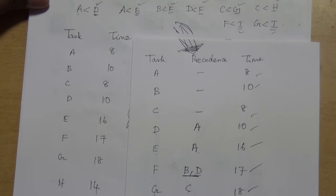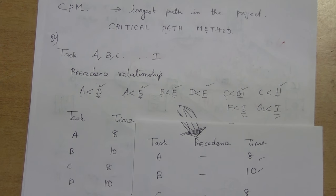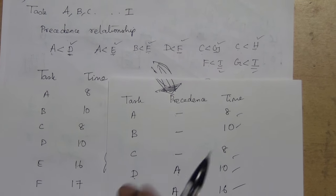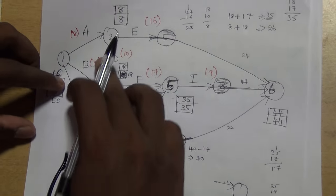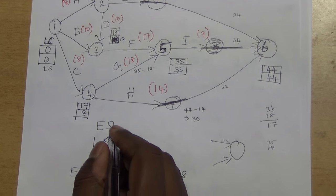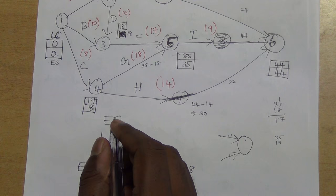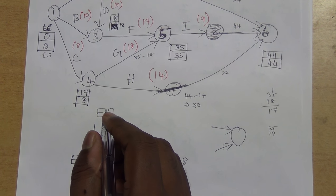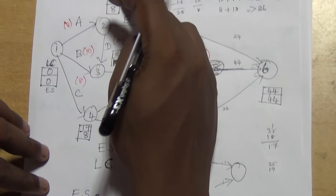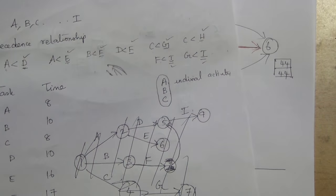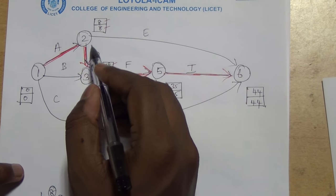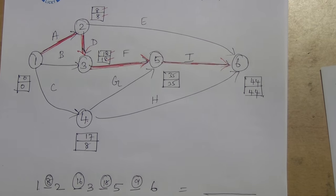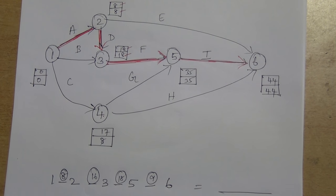To revise: we were given a precedence relationship, from which we identified predecessor data, drew the network diagram, calculated earliest start time and latest completion time. Using these values, if both upper and lower values are same at a node, we mark it as part of the critical path. Starting from the first node and traversing to the end gives us the critical path and critical length.